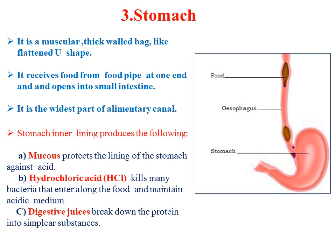Next is the stomach — a thick-walled bag whose shape is like a flattened U. It is the widest part of the alimentary canal, receiving food from the food pipe at one end and opening into the small intestine at the other end. The inner lining of the stomach secretes three things: mucus, which protects the lining of the stomach against acid; hydrochloric acid (HCl), which kills many bacteria that enter with the food and maintains the acidic medium; and digestive juices that break down proteins into simpler substances.